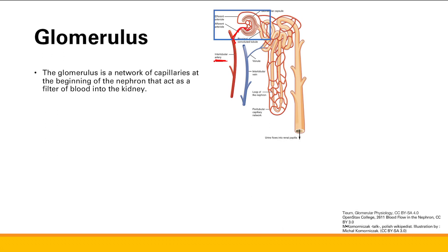The blood in the glomerular capillaries has two choices. It can either get filtered into the Bowman's space of the nephron — not the red blood cells, but the plasma and different particles in the blood — or the blood can keep going into the efferent arteriole.